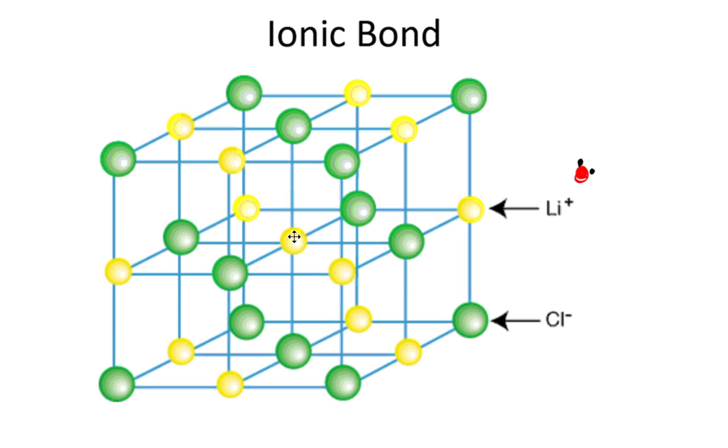Water is slightly negative on the oxygen end, slightly positive on the hydrogen end. Those negatives and positives interact with those ions, and it causes the salt to dissolve. This is why salt and sugar and those types of things dissolve in water.